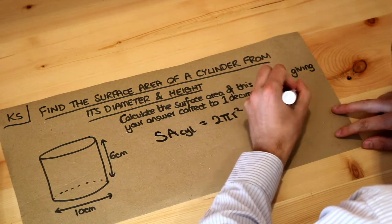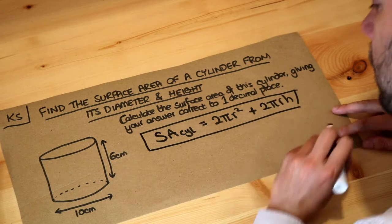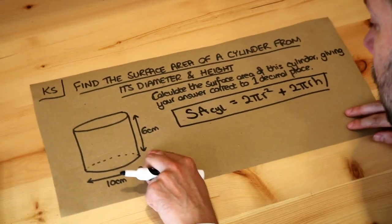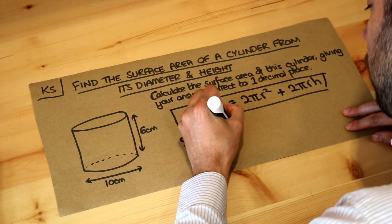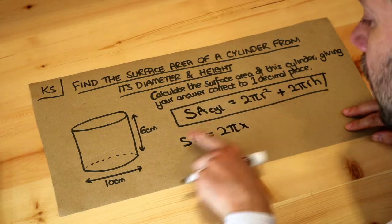I'm not going to go through how to derive that formula again, but let's just use this formula. The surface area is 2 lots of π times by the radius squared.